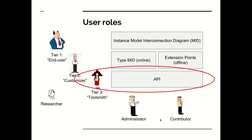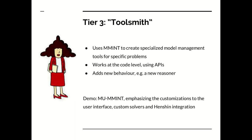We are now going to be talking about the tier 3 user, which we call the toolsmith. The toolsmith is a user of Mint who is able to customize Mint to create specialized model management tools that solve domain-specific problems. This is a user who interacts with Mint at all levels, including tier 1 and tier 2, but additionally can work with Mint at the API level, creating code that adds new behavior, such as a new reasoner or new visualizations.